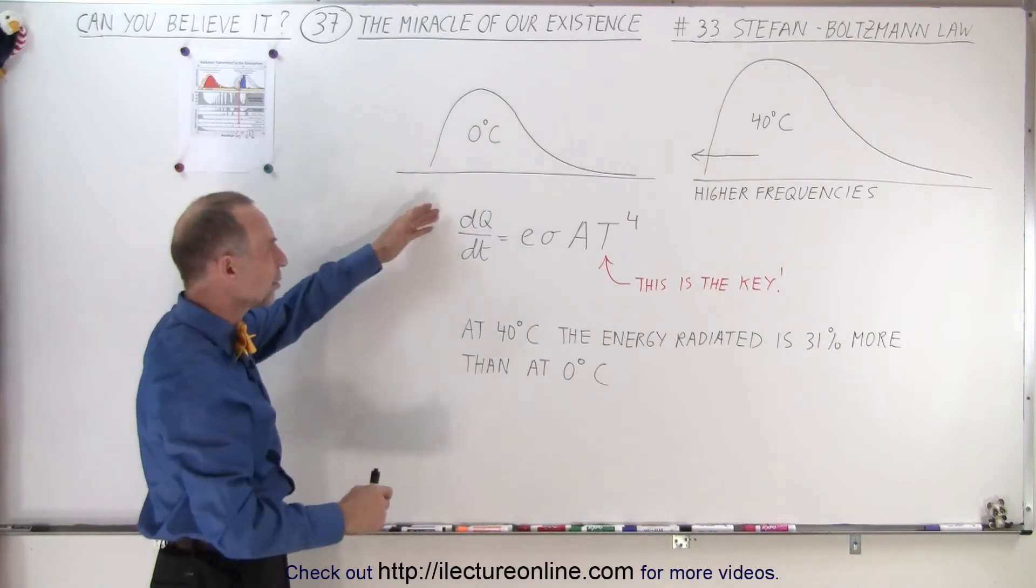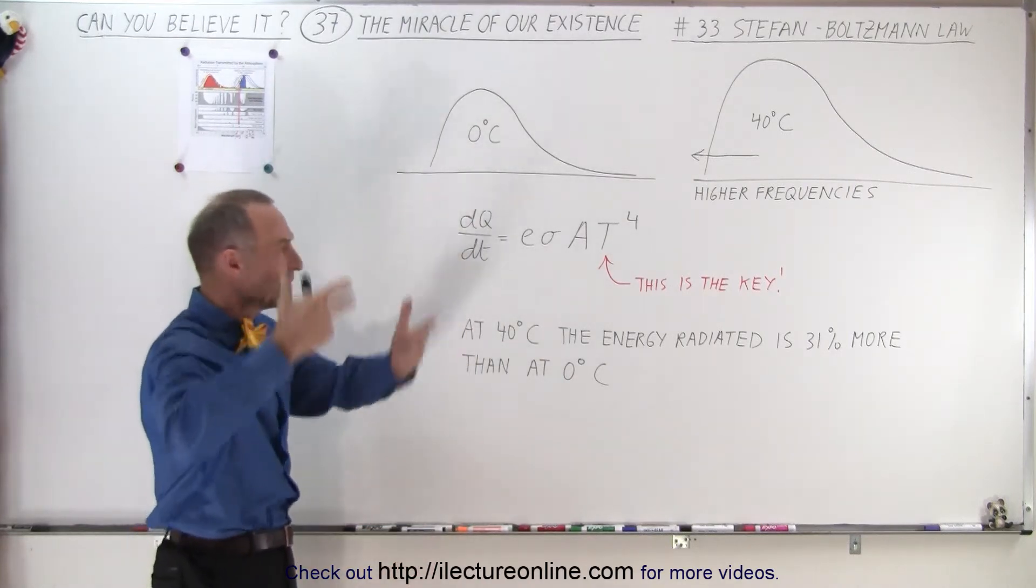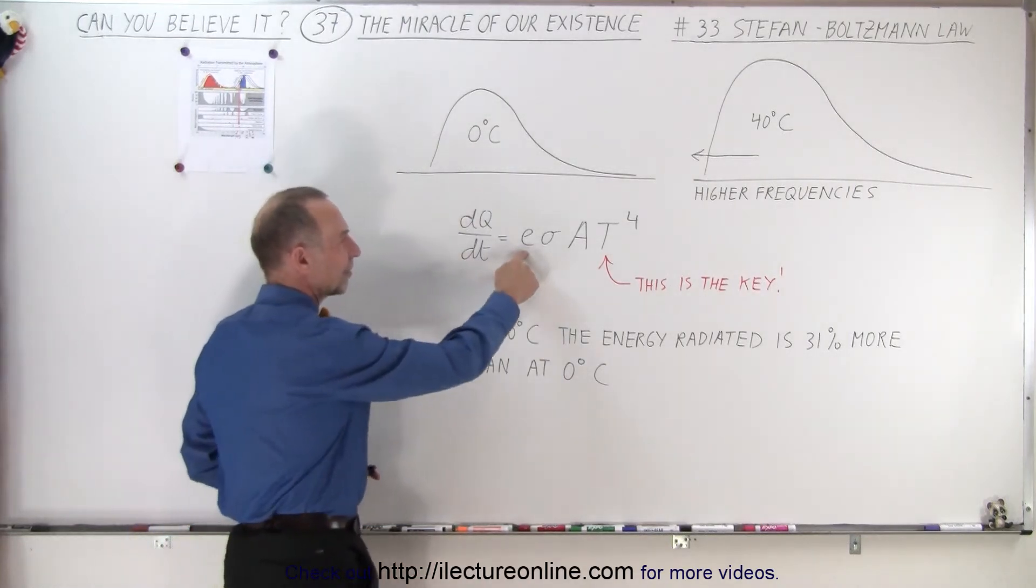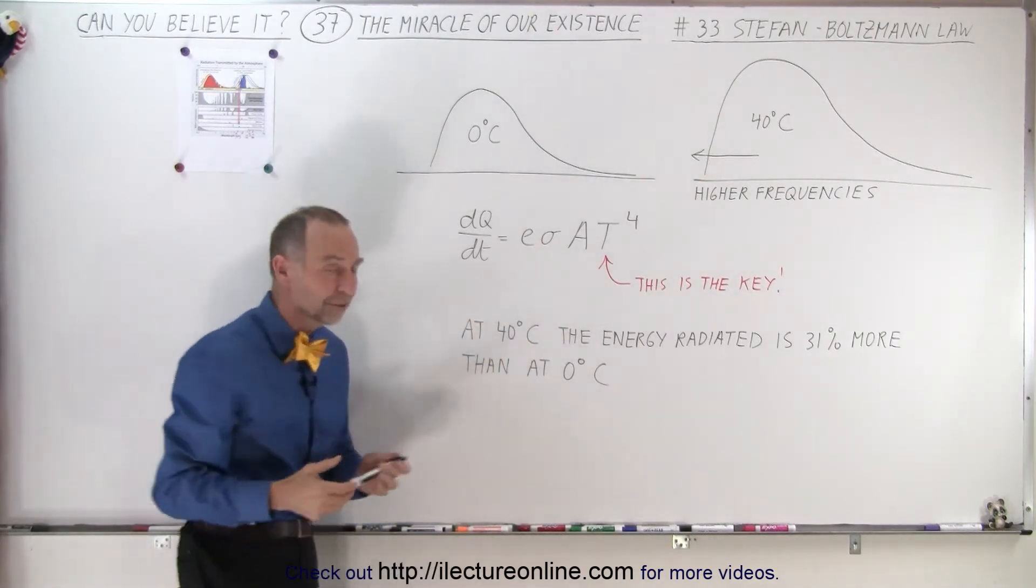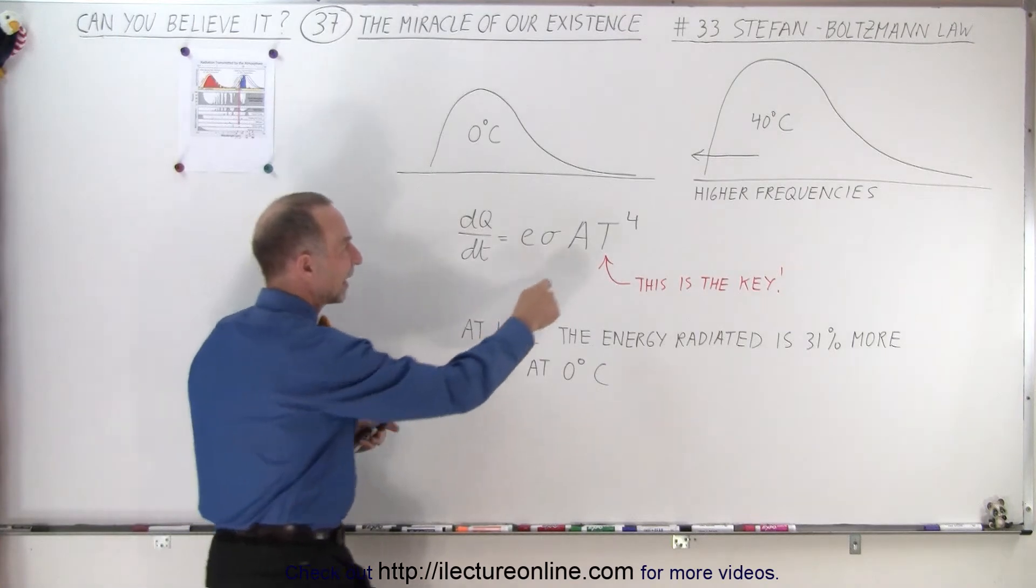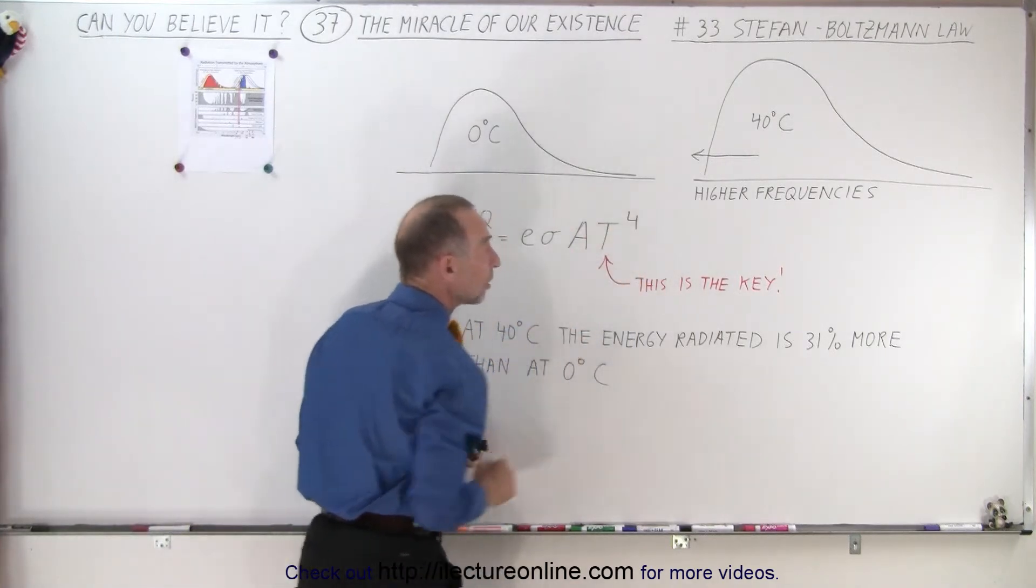Now, you don't have to understand what it means. dQ/dt is simply the amount of heat leaving the surface. E is the emissivity, meaning what the material is made out of, and sigma is simply a constant of nature. But this is the key portion of that equation.